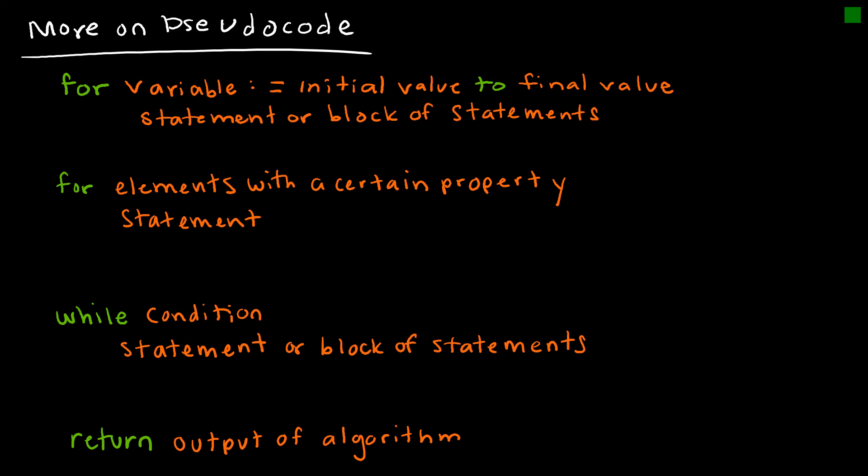A few more commands in pseudocode you might see. So this one is for some variable. So for some variable equal to an initial value to some final value. And so remember before we said for i, and we said that started at 2 to n. So that told me that that subscript was 2 through n. And then it tells us what's happening, statement or block of statements. Or we can say for elements with a certain property. Same thing for this, then some statement is true.